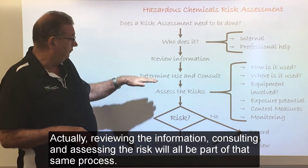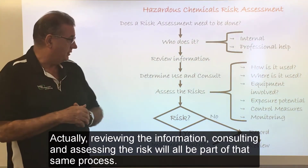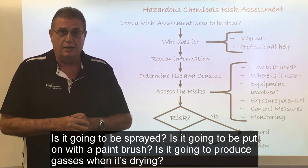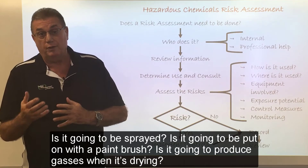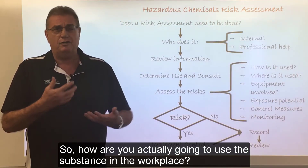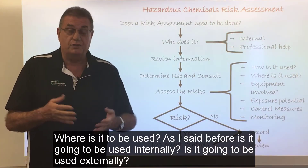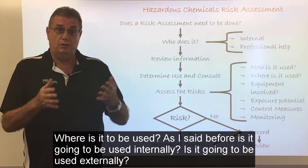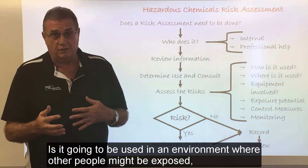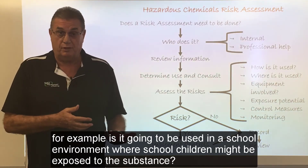Reviewing the information, consulting, and assessing the risk will all be part of that same process. In assessing the risk, we've got to determine how it is going to be used — is it going to be sprayed, put on with a paintbrush, or will it produce gases when drying? Where is it to be used? Is it going to be used internally or externally? Is it going to be used in an environment where other people might be exposed — for example, in a school environment where children might be exposed to the substance?